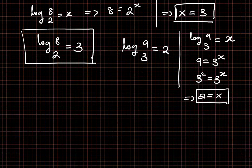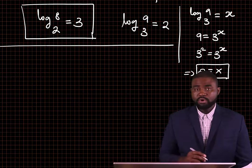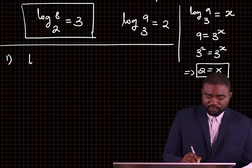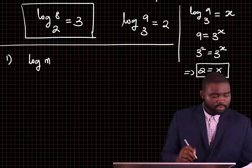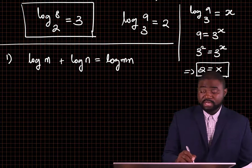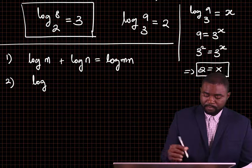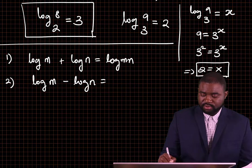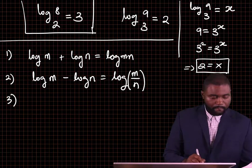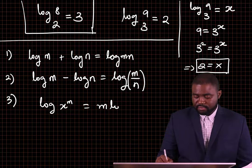So let's look at some of the properties of logarithms. The very first is: the log of m plus the log of n is equal to the log of mn — remember, they are to the same base. Second, the log of m minus the log of n is equal to the log of m divided by n. Third, the log of x raised to the power m is just equal to m log x.